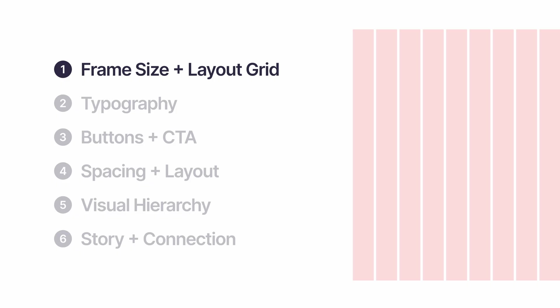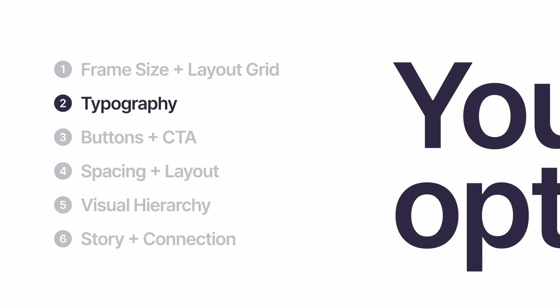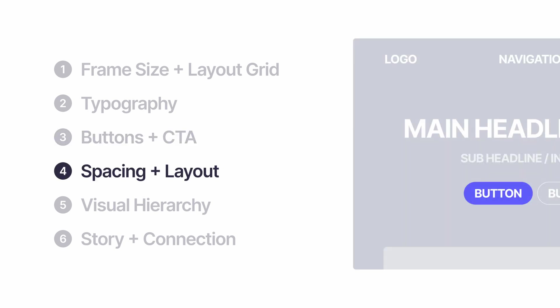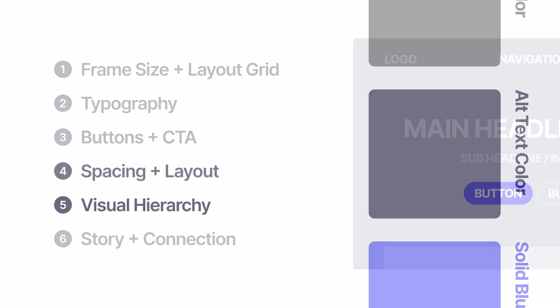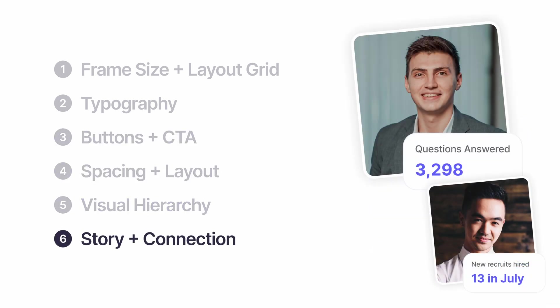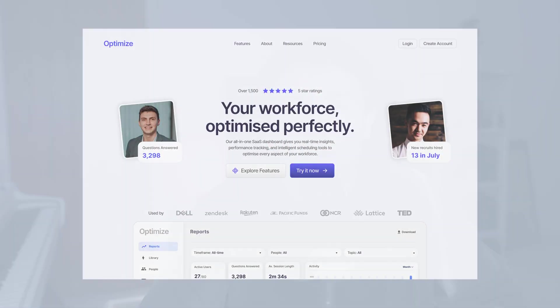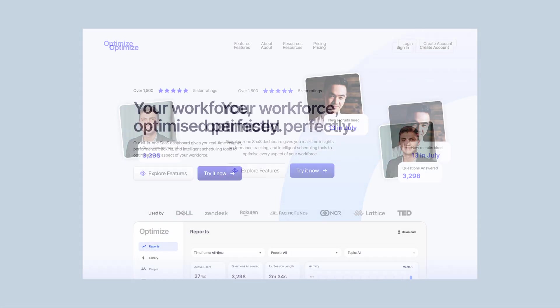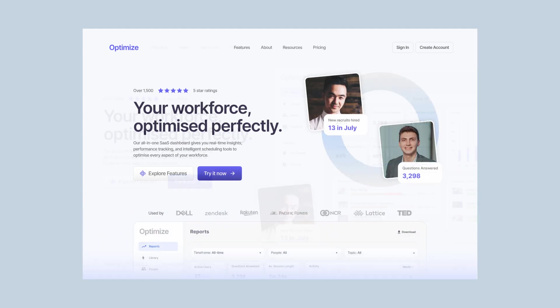In today's video we are going to be going over the core fundamentals of web design using Figma. We're going to touch on everything from frame size to layout grids, typography, buttons, call to action, spacing and layout, visual hierarchy, and the story and connection that ties it all together. Whilst we learn all of these things we're also going to be creating a modern landing page website.